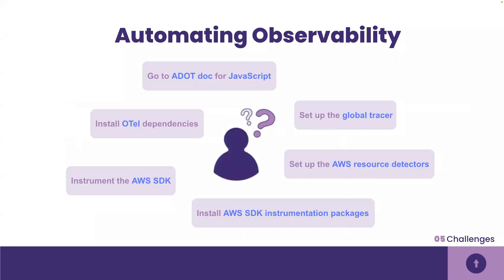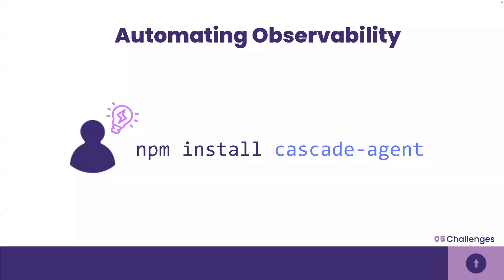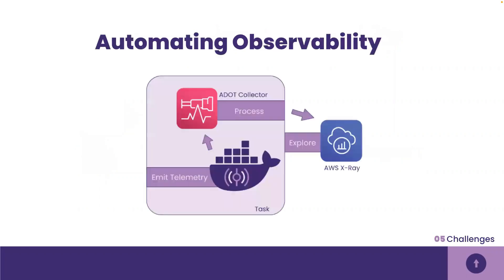The first step for automating observability was creating a one-line command for instrumenting users' applications. Without our instrumentation agent, users looking to instrument their application to work with the ADOT collector have to install numerous dependencies and follow multiple steps to get the connection working. To solve this, we wrote a Cascade agent in JavaScript and published it as an NPM package. Users simply require the Cascade agent at the top of their codebase so that their app is compatible with the ADOT collector. We also connect the agent and the collector by specifying them as a sidecar in the task definition so that upon deployment, users can see traces on AWS X-Ray.